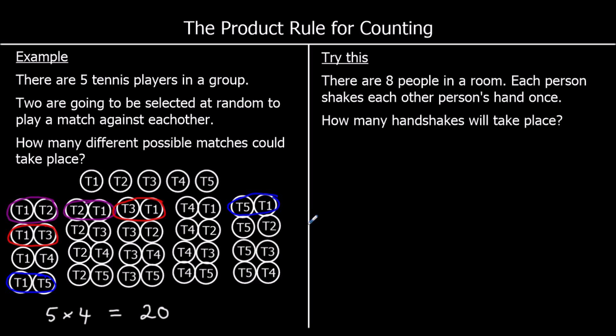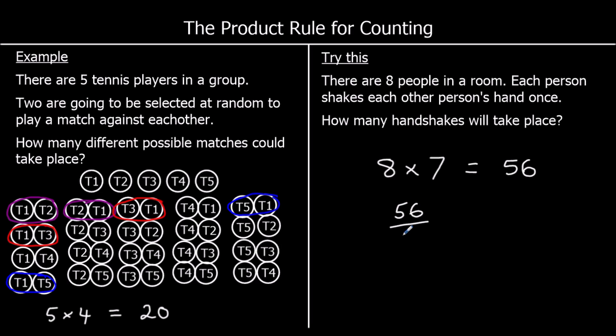Try this question: there are eight people in a room; each person shakes each other person's hand once. How many handshakes will take place? There are eight people and they are all going to shake hands with seven other people, so it's eight times seven, which is 56. We have the same issue as with the tennis players. If person A shakes hands with person B, we don't also want to count person B shaking hands with person A. So we halve this number: 56 divided by 2 is 28 — that's 28 different handshakes.